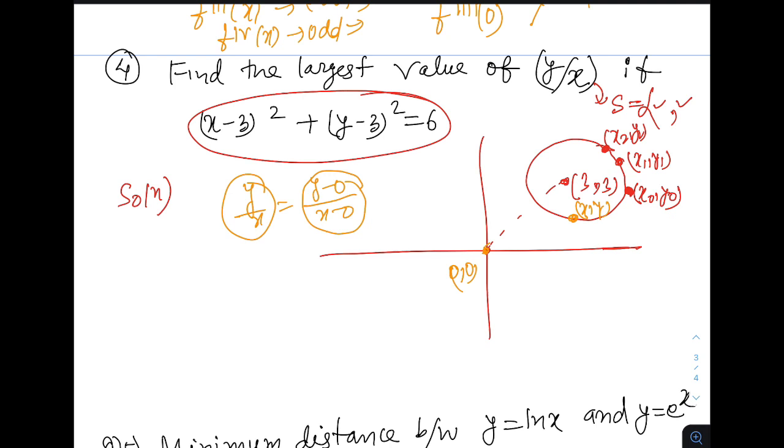So this slope if I call this to be theta I want to maximize tan theta. Now what condition it will maximize? It is very easy to see that as this point keeps on dancing on this curve the maximum value will attain when it is a tangent. So we need to find the theta or the value of slope corresponding to this special x and special y.